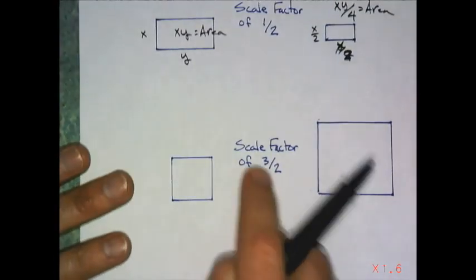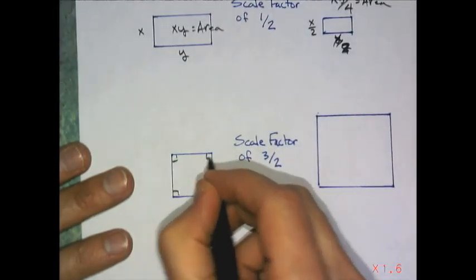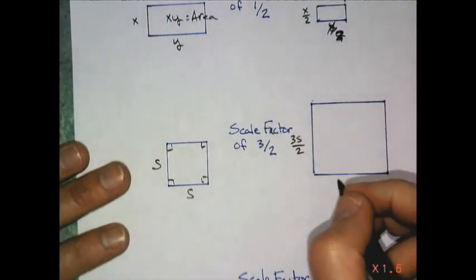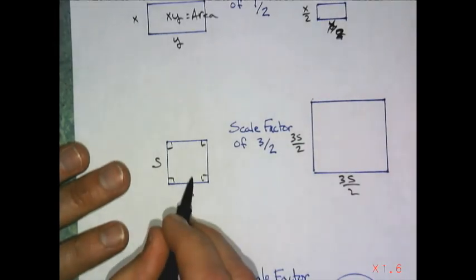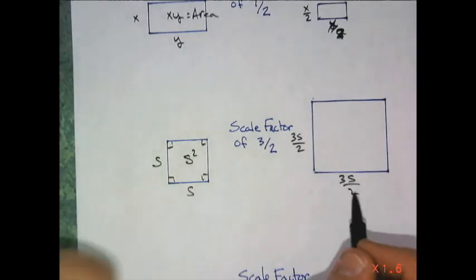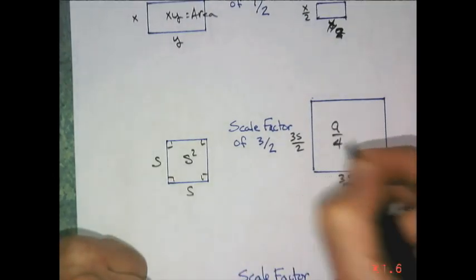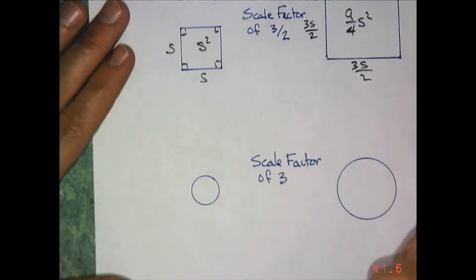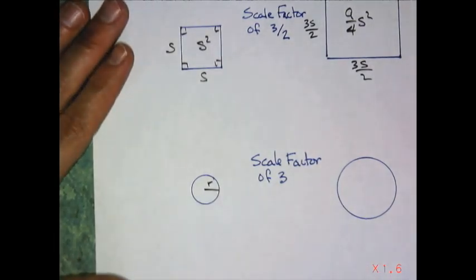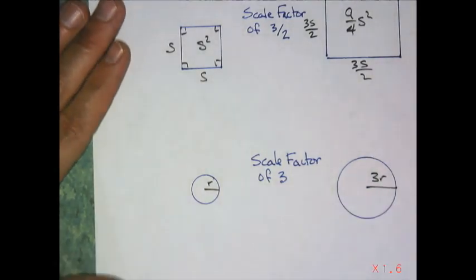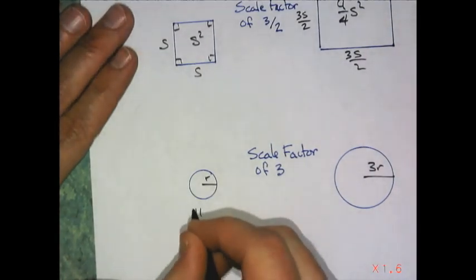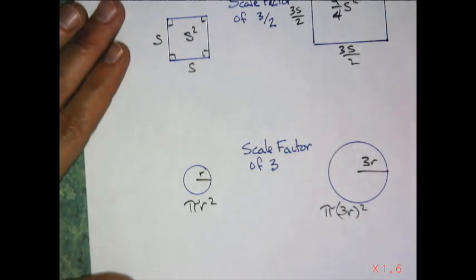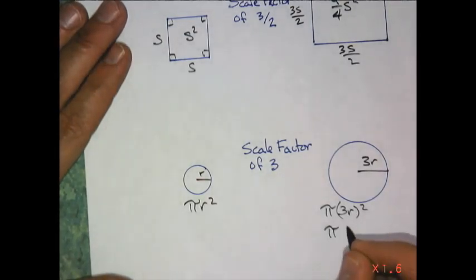Two squares, scale factor of three halves. And if this indeed is a square, then all the sides are the same. So if this is S, this would be three S over two. This side would also be three S over two. A square's area, that's S squared. This one would be three halves times three halves, that would be nine fourths S squared. And once again, here's a scale factor of three. So if this has a radius of R, then if it's a scaled up version, this would be three R. The area of this one would be pi R squared. And over here would be pi, that's three R squared, so that is pi nine R squared.